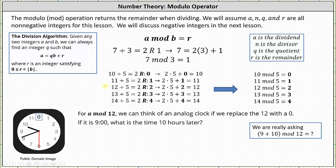For a mod 12, we can think of an analog clock if we replace 12 with a zero, which I've done here on the left. If it is nine o'clock, what time is it ten hours later? Starting at nine o'clock, if we move ahead ten hours — three, six, nine, and ten — it is now seven o'clock. This question is really asking: what is the sum of nine and ten mod 12? Well, 19 mod 12 is equal to the remainder when 19 is divided by 12, which is seven.